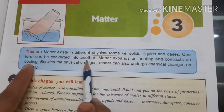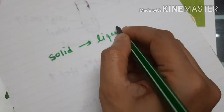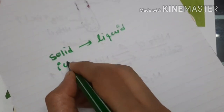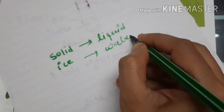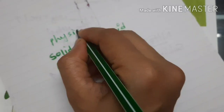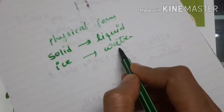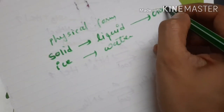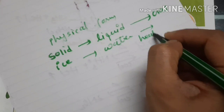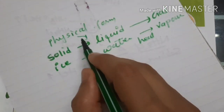One form can be converted into another. Solid can convert into liquid — for example, ice can convert into water, that is solid converting into liquid. Liquid can also convert into gas — like water, when we heat water, it converts into vapor. So these are the conversions of physical form.